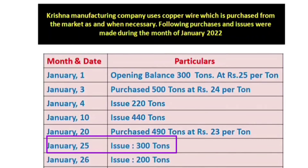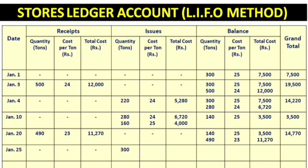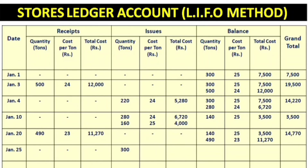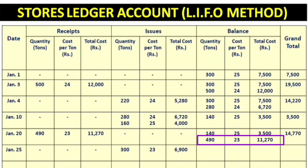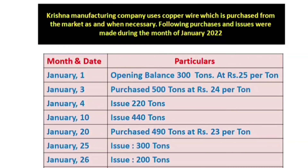For January 25th, we issue 300 tons. Using LIFO, we take from the most recent stock: 490 tons at Rs.23. We issue 300 tons at Rs.23, which leaves 190 tons at Rs.23 remaining in stock alongside the 140 tons at Rs.25. The balance after this issue is 190 tons at Rs.23 and 140 tons at Rs.25.